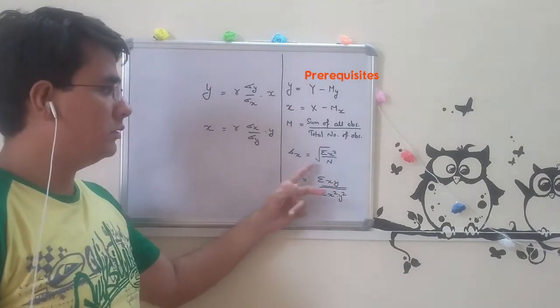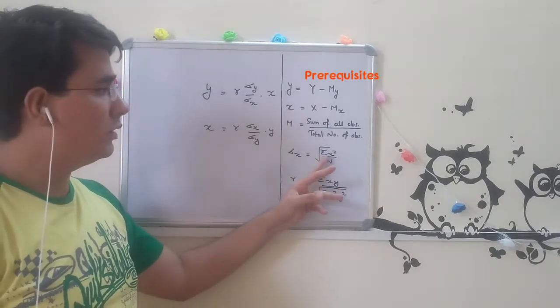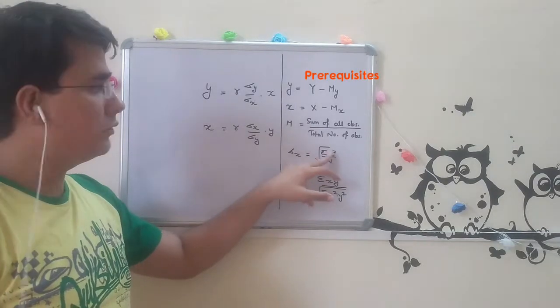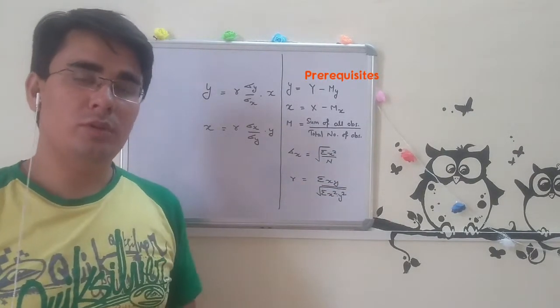Standard deviation of x would be root of sigma x square upon n. Standard deviation of y would be root of sigma y square upon n.